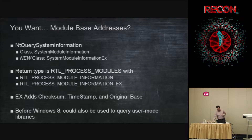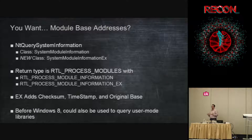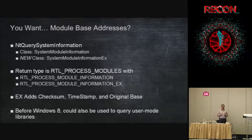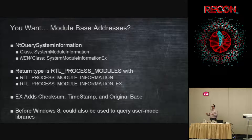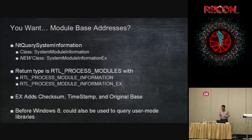Let's start with the old stuff. NtQuerySystemInformation is an undocumented API that gives you a whole lot of information about anything you want. In Windows 8 it has over 160 different pieces of information on the system that you can query, each giving you sometimes dozens of fields about each class. It's called undocumented because it's an NT function, but if you search for it on the internet you will find some documentation.